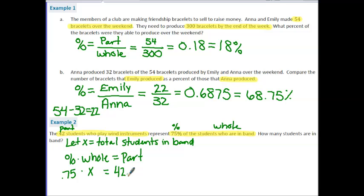So this creates an equation that we can solve, and it's only one step. We have multiplying, so we are going to divide both sides by 0.75. That cancels my 0.75, leaving us with X. And when I do 42 divided by 0.75, I get 56 students. So this is an example where we are using our percent times whole equals part formula.